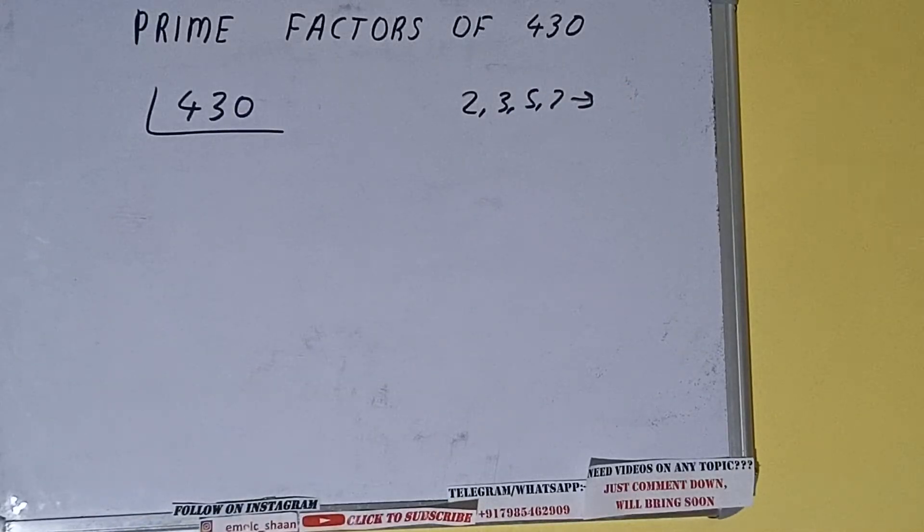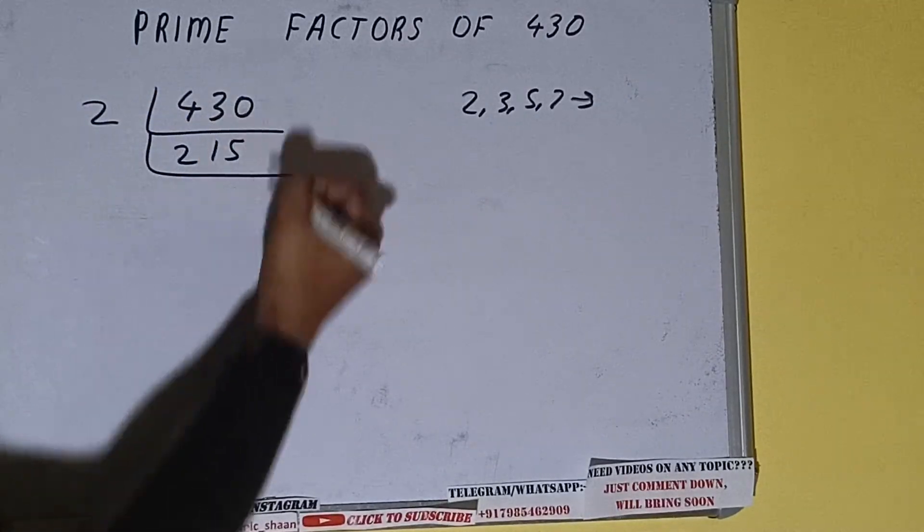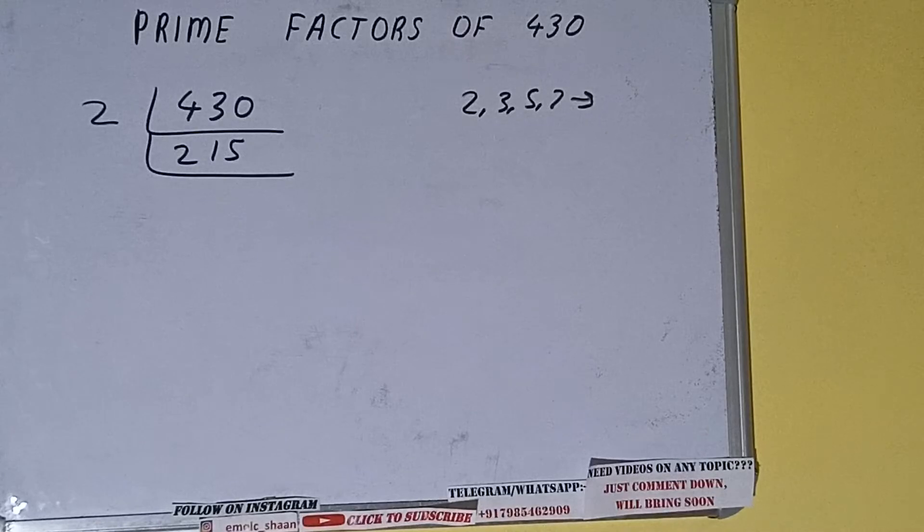So we'll be checking with the lowest prime number we have, that is 2. Is the number 430 divisible by 2? Yes it is, because the number is even. So divide it and we'll be having 215. Now is this 215 further divisible by 2? The answer is no, because the number is odd.